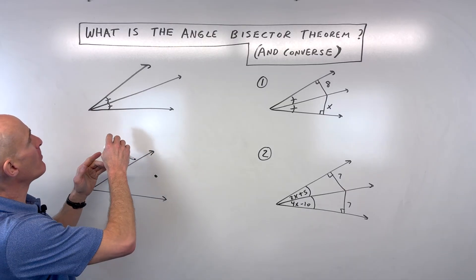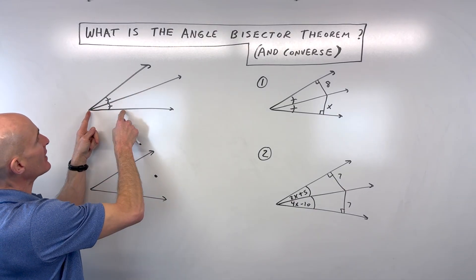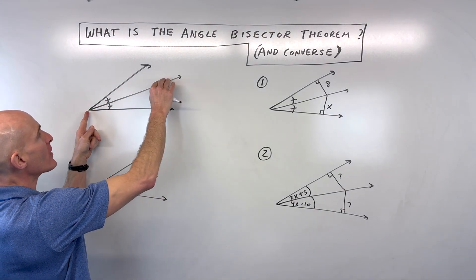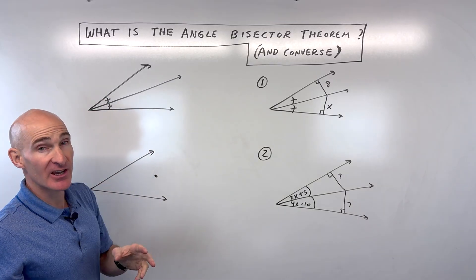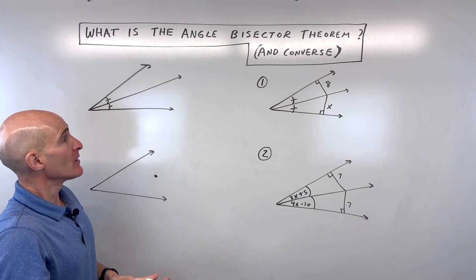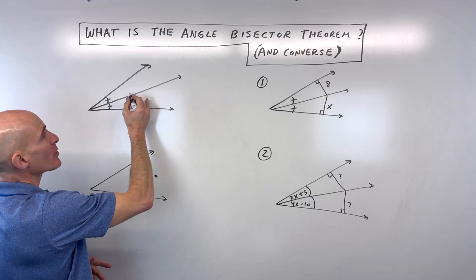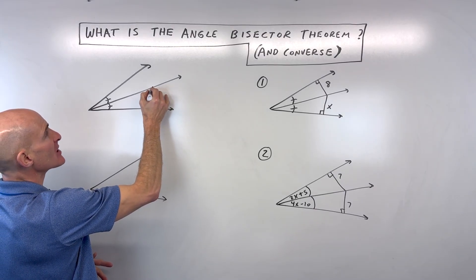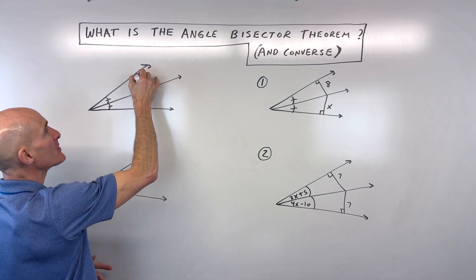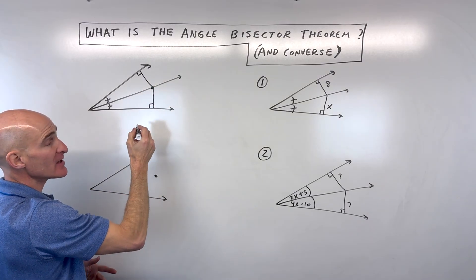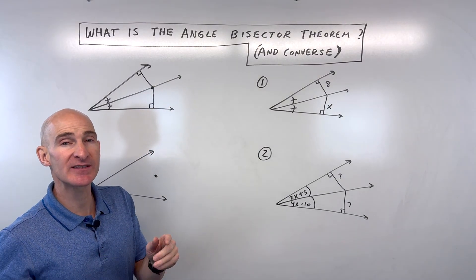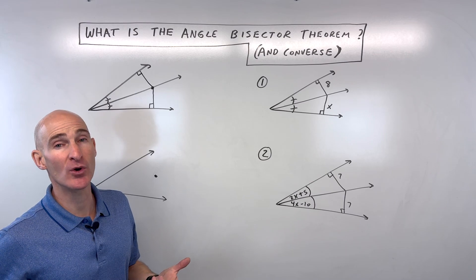So first of all, the angle bisector theorem. Say you have this angle here, and you draw a ray that bisects, meaning it cuts the angle in half. If you pick a point anywhere along this angle bisector, let's just say right here, and you measure the perpendicular distance. Now it's important that you always measure the perpendicular distance or the right angle distance, because that's the shortest distance from a point to a line.